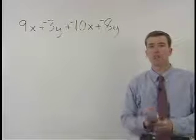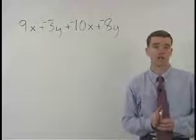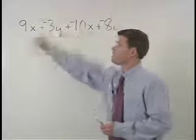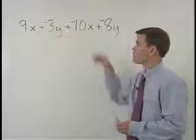To simplify, we can only combine what are called our like terms. And in this problem, we have a pair of like terms in our x terms and we have a pair of like terms in our y terms.